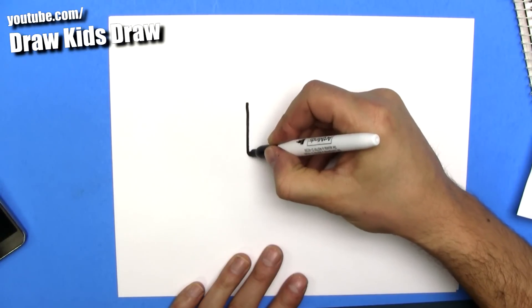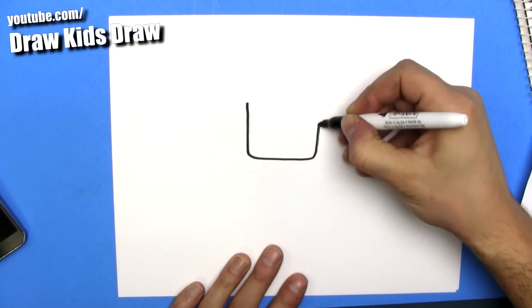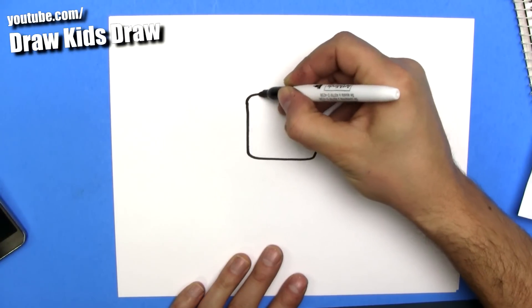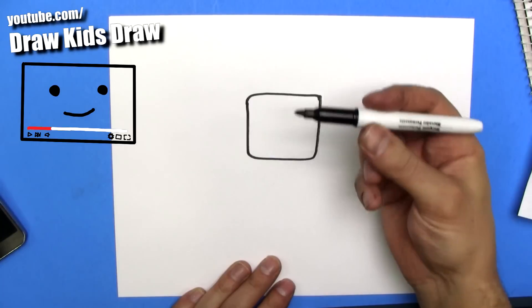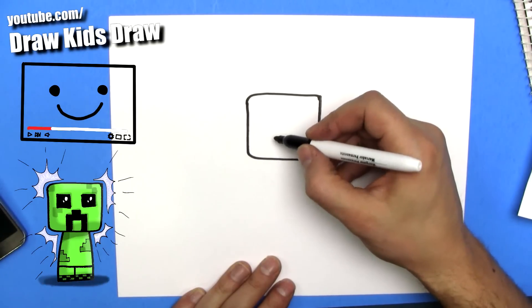Let's get started. First off, we're going to draw a big square. This is going to be the Creeper's head. I bet you knew that. We're using a medium point marker. We'll move on to a fine point in a bit.